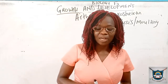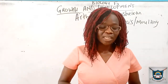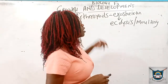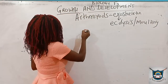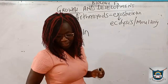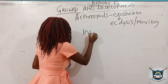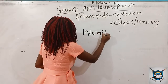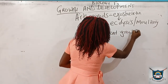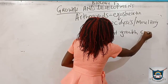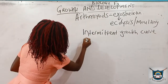So if we take parameters of growth, for example volume change, in these organisms we are going to get a different type of curve called the intermittent growth curve.